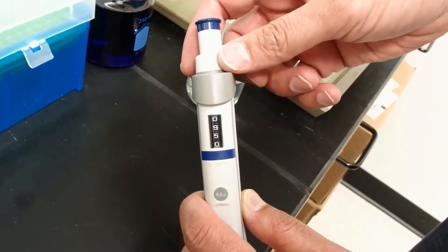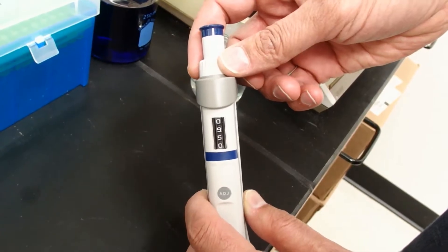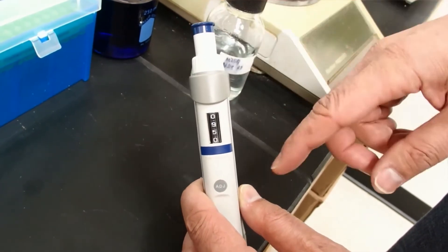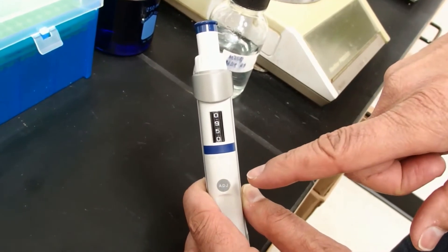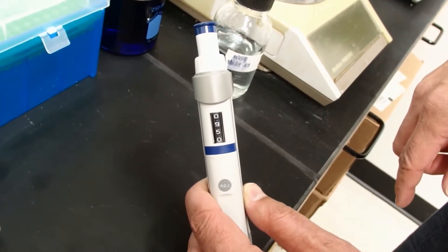It's very important to dial the pipette only within its range. If you go outside of its range, so for this pipette to go below 100 microliters or above 1,000 microliters, it will be inaccurate and will damage the pipette.